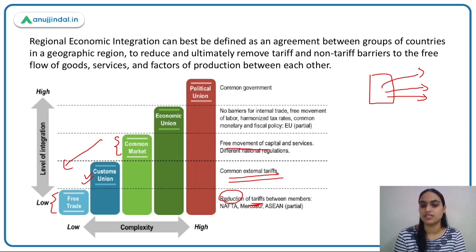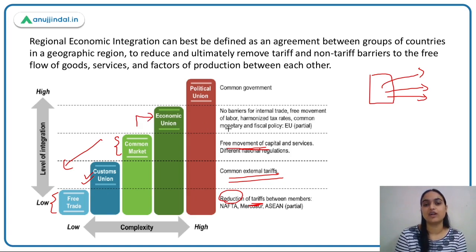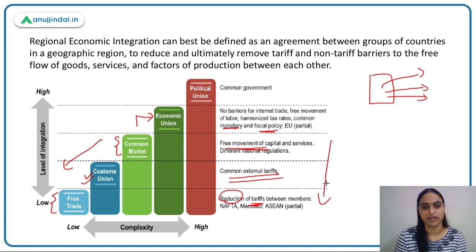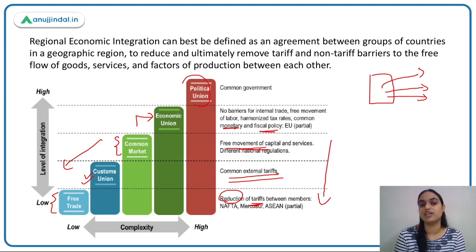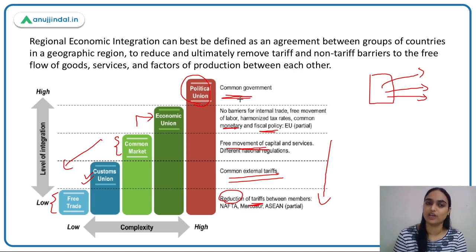The common market includes features of the lower two levels plus free mobility — capital and services can move easily from one nation to another. The next higher level is the economic union, where countries follow a common monetary and fiscal policy in addition to all lower-level features; the European Union is such an example. The highest level is political union, where countries have a common government and political policies — very difficult to achieve.